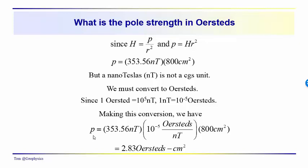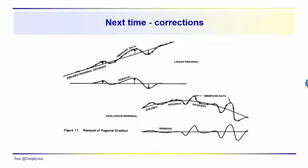Hopefully you were able to work through that, or you can go back and follow the logic. Next time we're going to talk about corrections for magnetic data. In most cases, for exploration purposes, magnetic corrections are fairly straightforward — not as difficult and time-consuming as corrections for gravitational fields, such as free-air, Bouguer plate, elevation, tide, and drift corrections. You'll find the corrections for magnetics quite a bit simpler. Thanks for joining us and we'll talk to you next time.